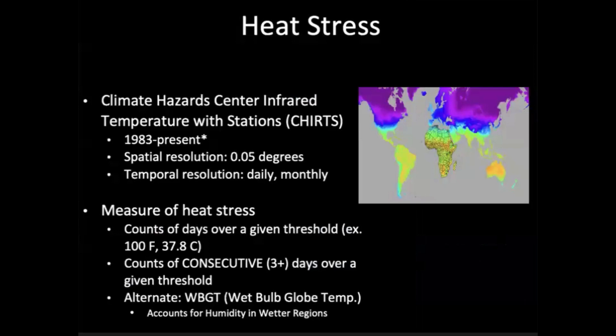We've focused on rainfall so far, but I want to briefly talk about a couple of other measures. We have a complementary product called CHIRTS — available from 1983 to present, though the publicly available version only goes to 2016. We have a version that we will be topping off and updating monthly soon. There are a number of measures of heat stress we can exploit: counts of days over a given threshold such as 100 degrees Fahrenheit, counts of consecutive days over a given threshold, and some derived products. One of great interest right now is wet bulb globe temperature, which accounts for humidity in wetter regions — a better measure of actually experienced heat stress in tropical areas.